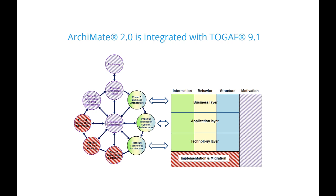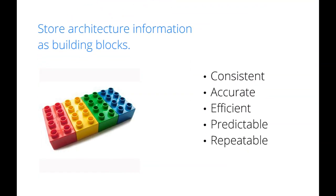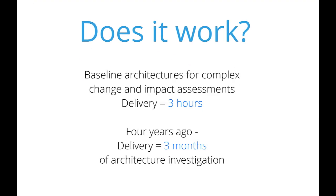What we can do with Archimate is: if a team of architects can learn and start to use a consistent architecture content metamodel, that's a giant leap forward, even if they're not using an architecture repository. Architects are creating reusable architecture building blocks that allow the architects to work in a way that's more consistent, accurate, efficient, predictable, and repeatable.